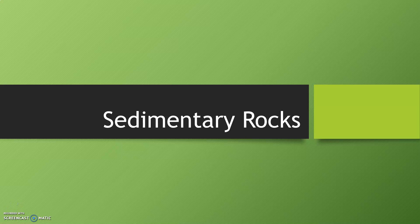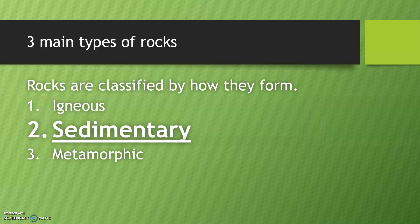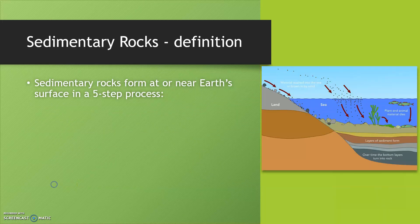Today we'll learn about sedimentary rocks. There are three main types of rocks and rocks are classified by how they form. We've already learned about igneous rocks, and today we're covering sedimentary. Sedimentary rocks form at or near Earth's surface in a five-step process.